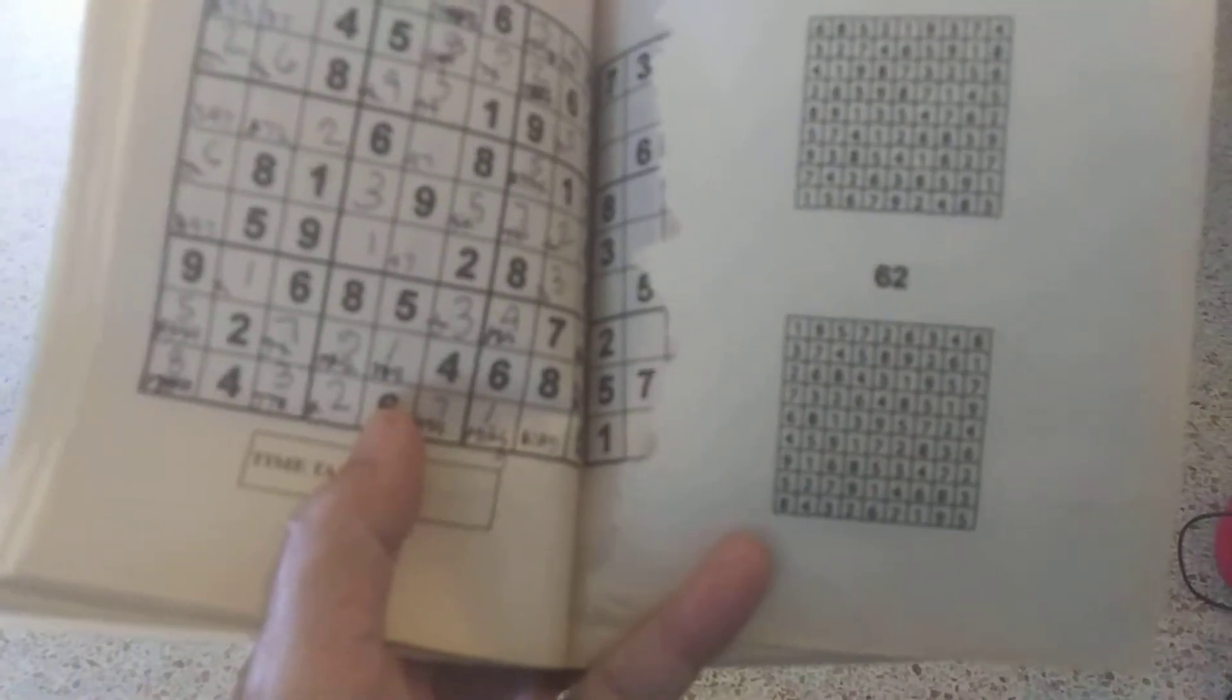Cheating step two, this is puzzle 62. This is the answer to puzzle 62. I keep the answer right along the page.